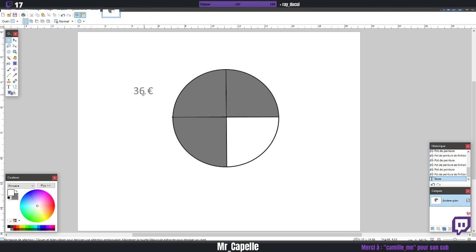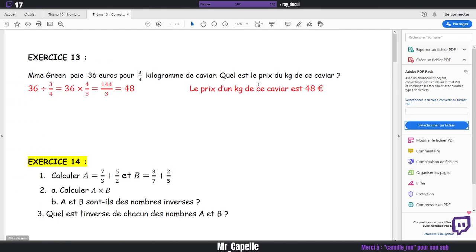Donc, du coup, ici, une fois que vous avez ça, vous savez que 36 divisé par 3, effectivement, ça fait 12. Donc, du coup, chaque part vaut 12. Yanis, 36, là, c'est le prix des trois parts. Des trois quarts de kilos. Donc, un quart de kilos, ça fait 12 euros. On peut le noter sur chaque part. Chaque part vaut 12 euros. Donc, le gâteau, au total, fait 48 euros. C'est comme ça qu'on retrouve ça sans utiliser des fractions.